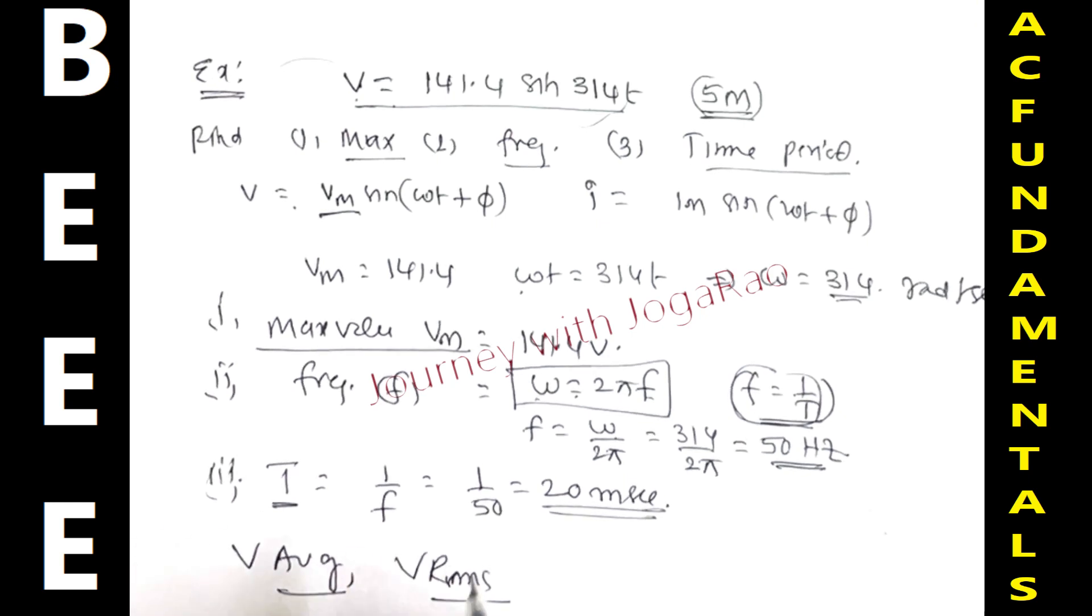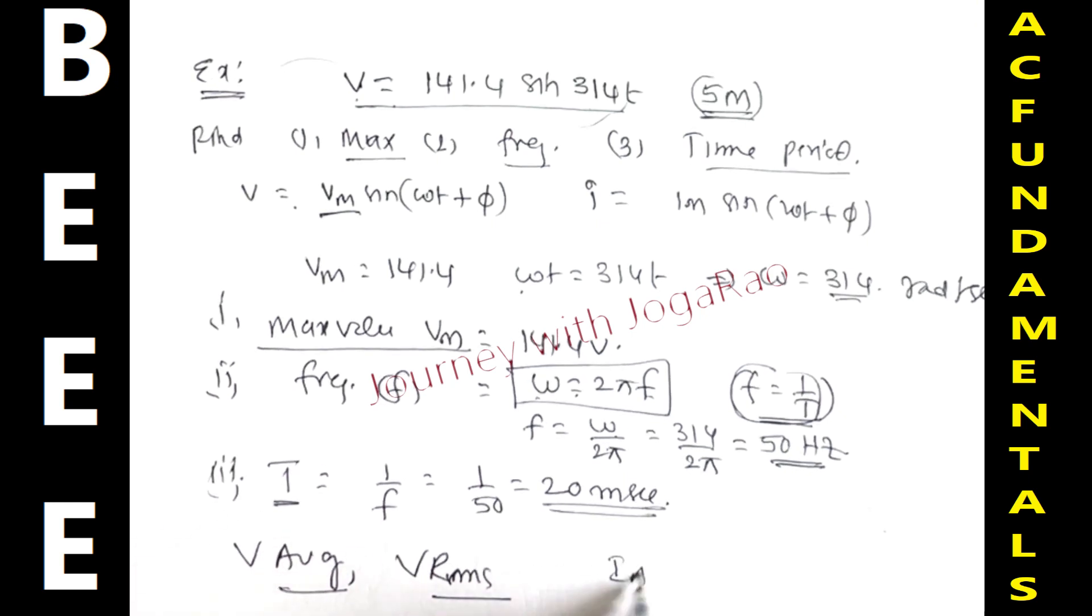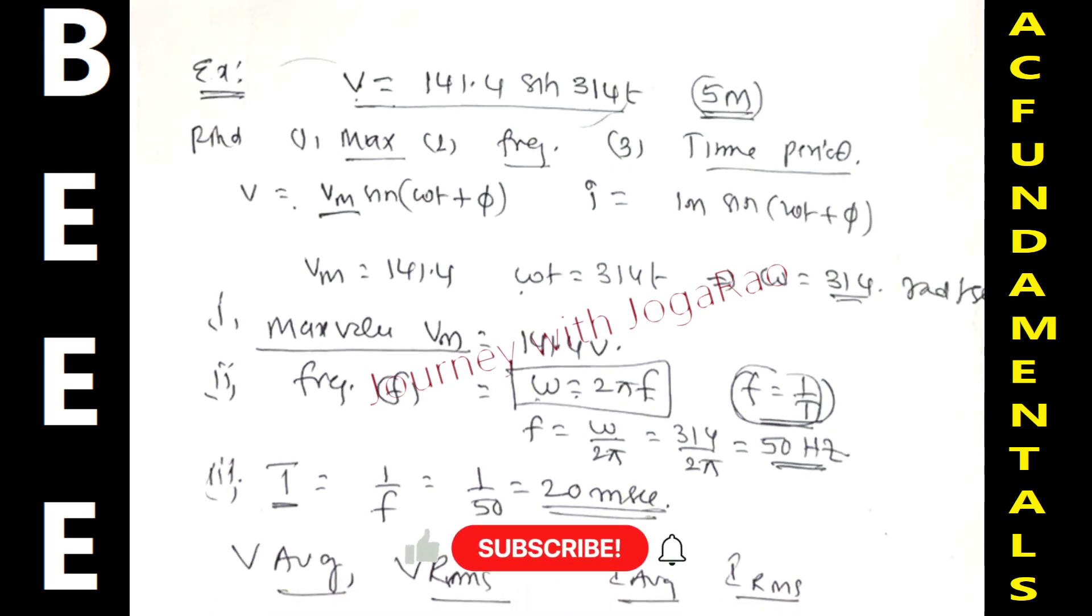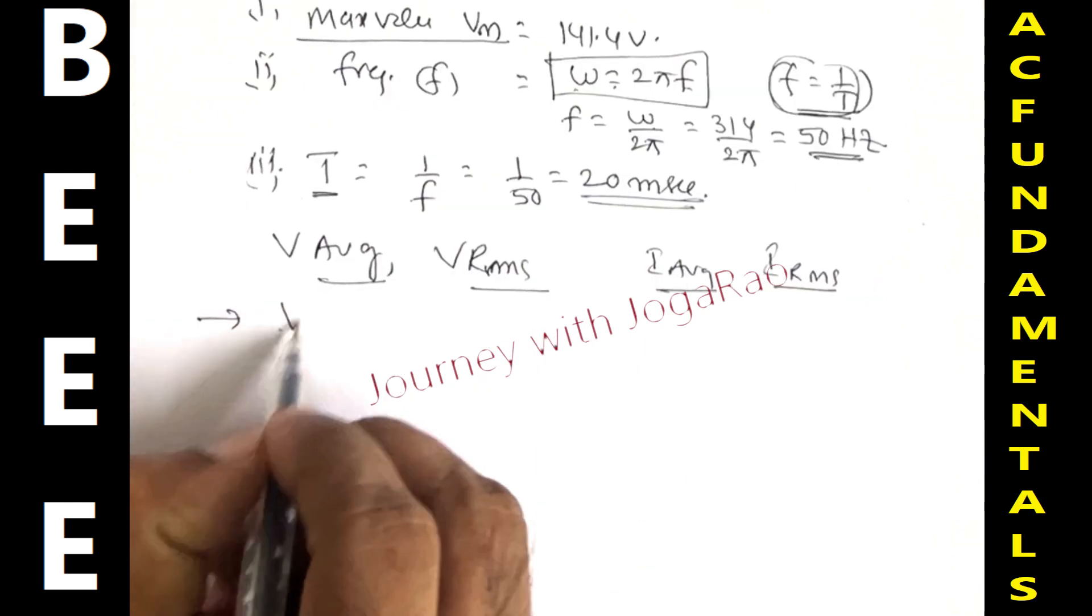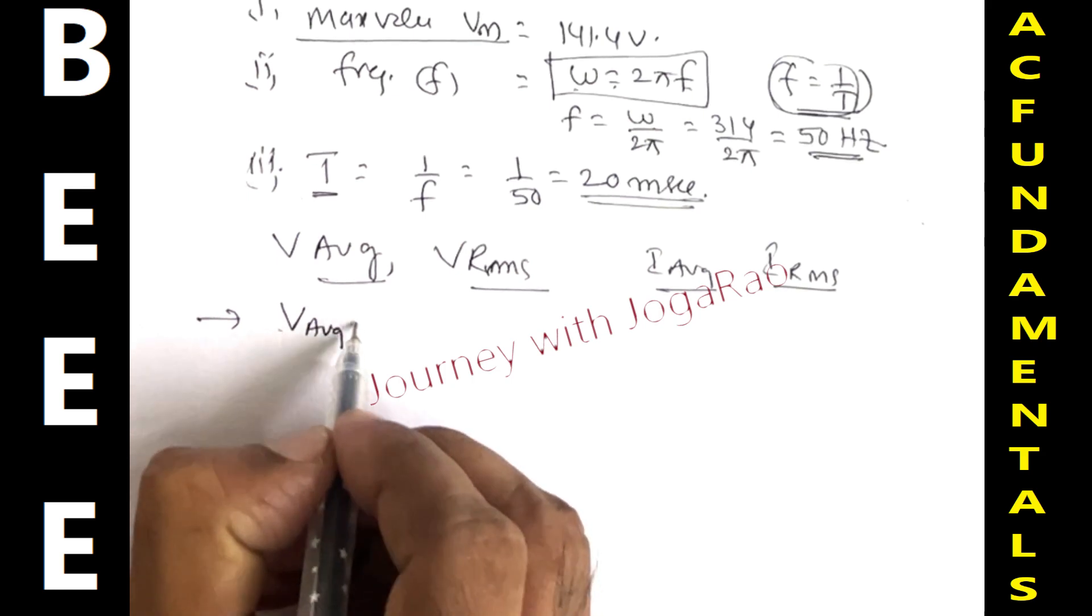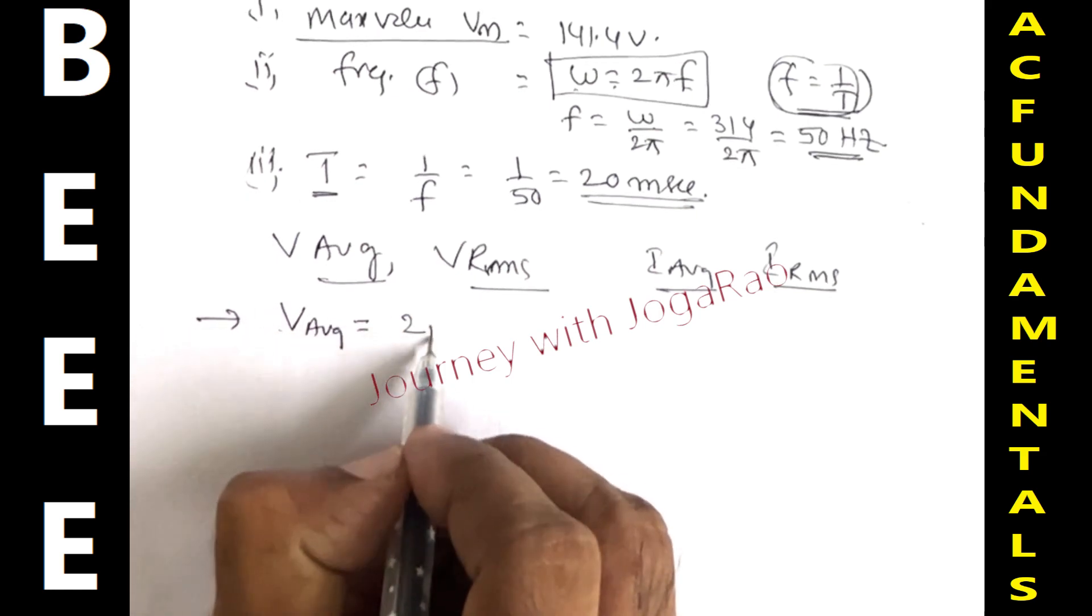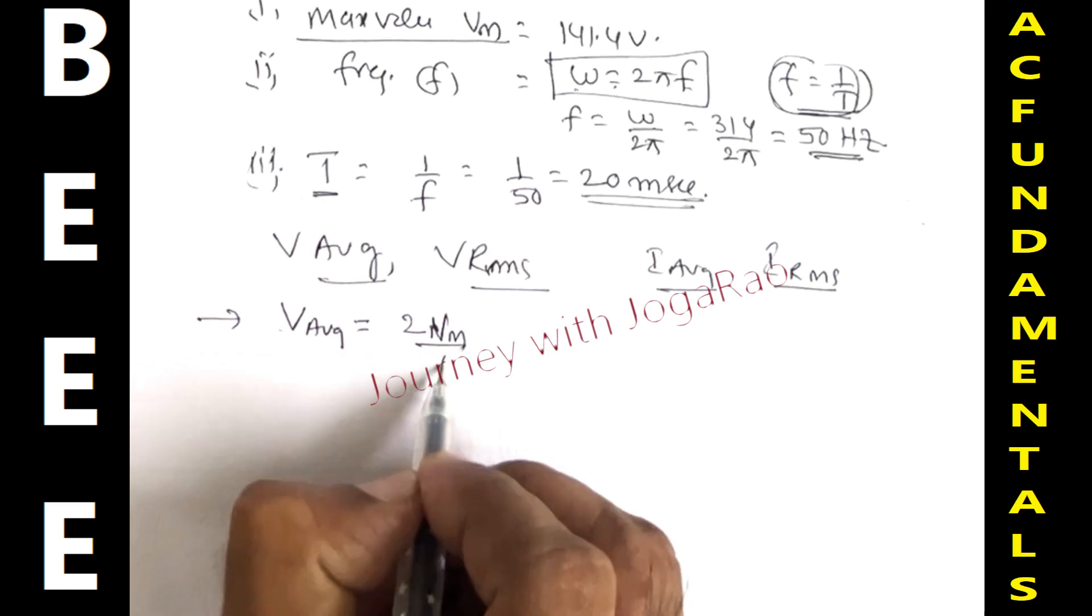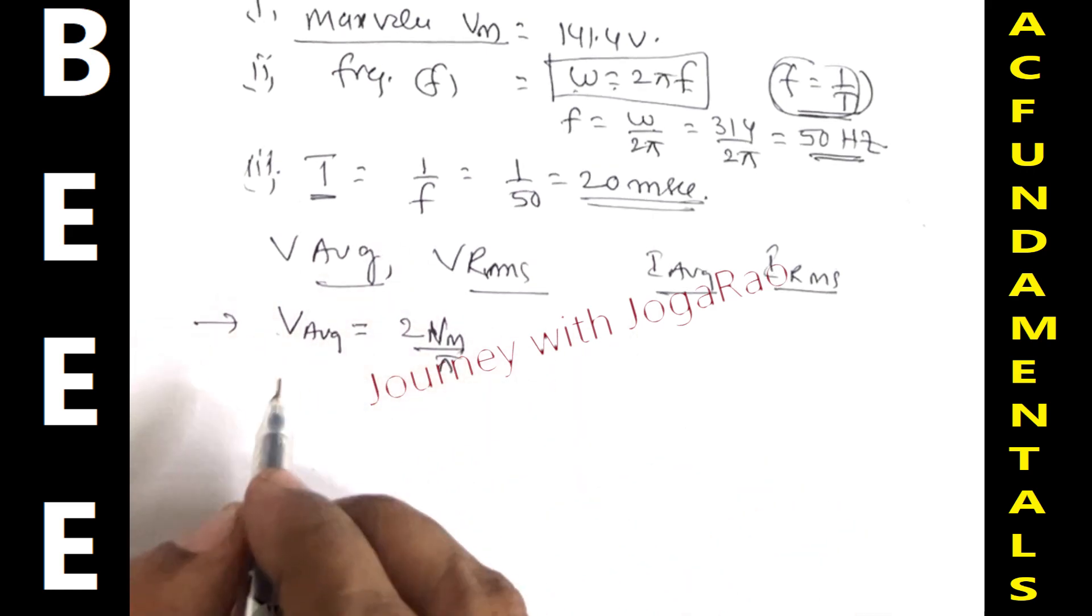Next, average value and RMS value. V average, V RMS, I average, I RMS values. Dear students, average value and RMS value for sinusoidal waveform derivations are in the study material. V average is equal to 2 Vm by pi.